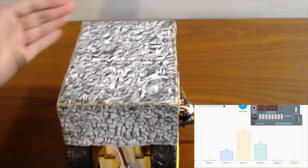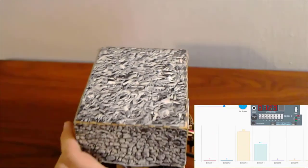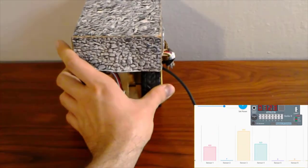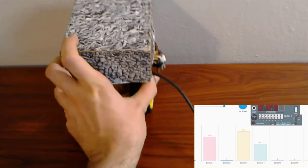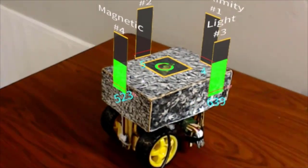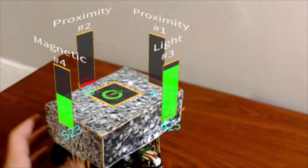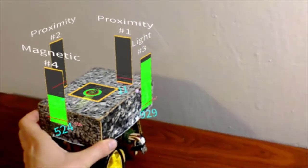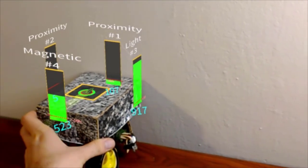Without augmented reality, sensor values can be seen on a computer screen and users must understand how the computer display maps to the spatial locations of sensors in the real physical world. In contrast with augmented reality, we can see the sensors while looking directly at the robot and also we can see the identifiers and meaning of each sensor to make it easier to program the robot.